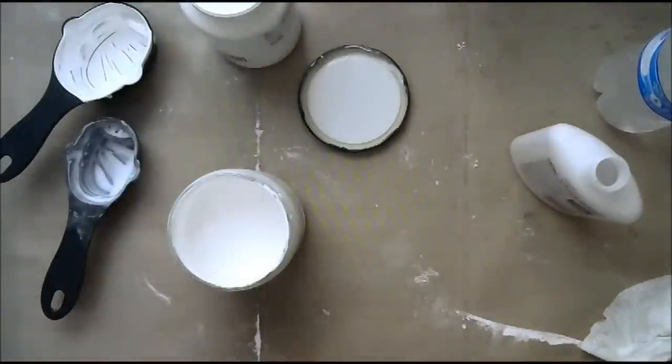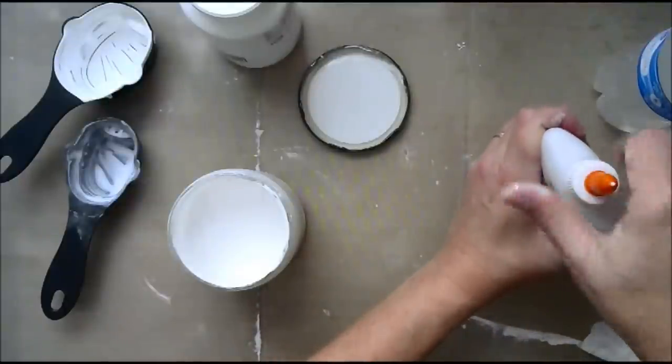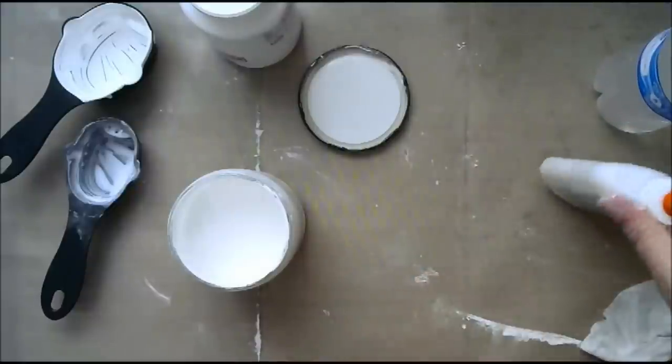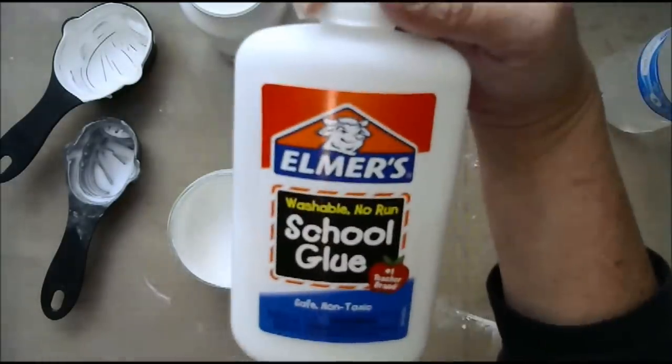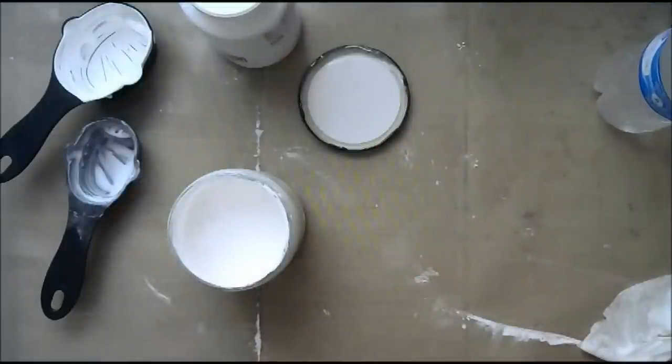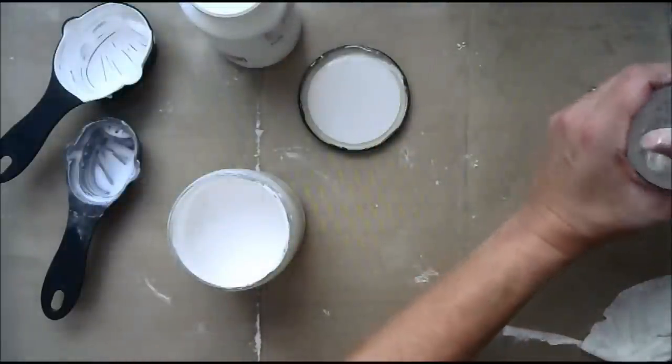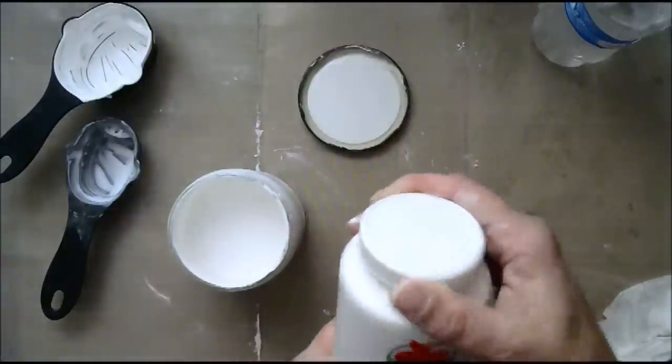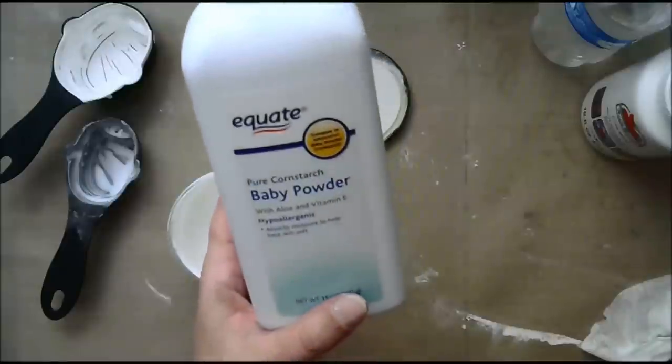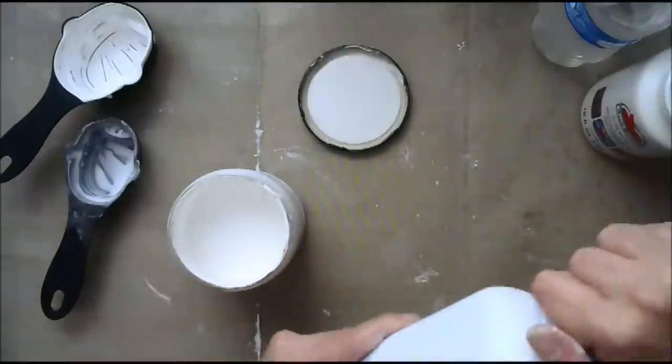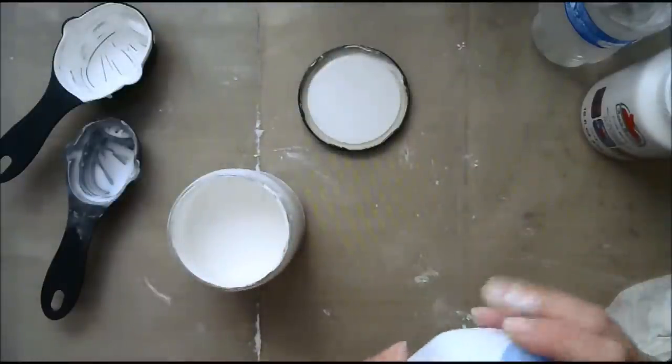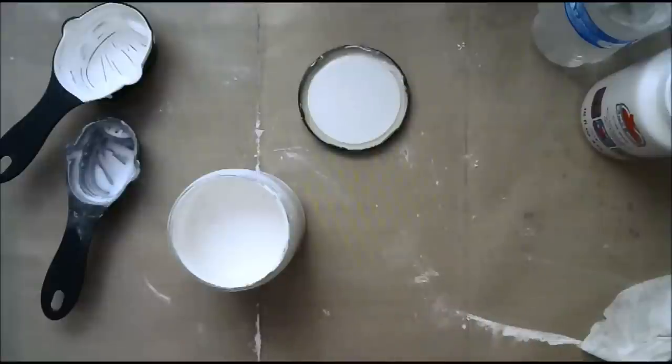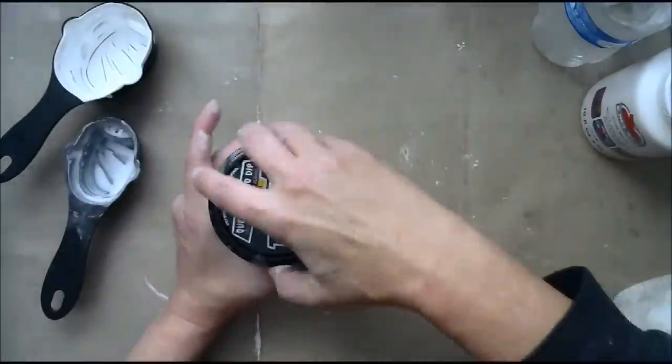That is my recipe for homemade gesso. Again, that is a quarter cup baby powder, a quarter cup water, a half a cup white paint, and a quarter cup of white glue, school glue. Just plain old school glue. I'll buy a lot of that when it's back to school time. And, you know, Walmart acrylic craft paint, just plain old craft paint. And then, baby powder, plain old baby powder. Which I have a lot of in my house, because I have a small granddaughter, three months old this week. So, we use a lot of baby powder. But, that's it.